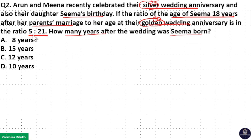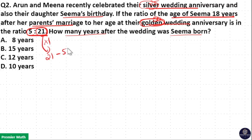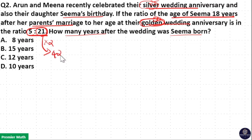We have a ratio of 5 to 21. The 21 part means their daughter's age at their golden wedding anniversary. If I multiply 21 by 1, this will become 21. The difference between 21 and 50 is more than 30, which is not in the options, so this is not possible. If I multiply it by 2, this will become 42. And the difference between 42 and 50 is 8 years, which is in the options.